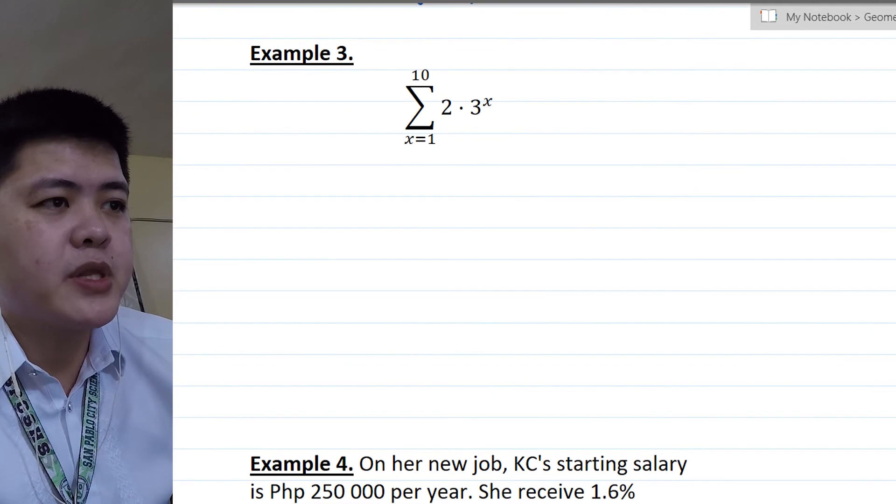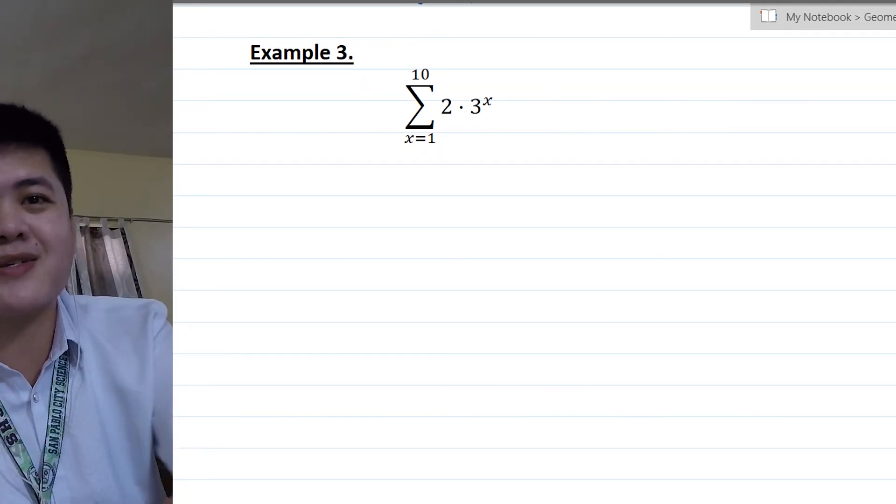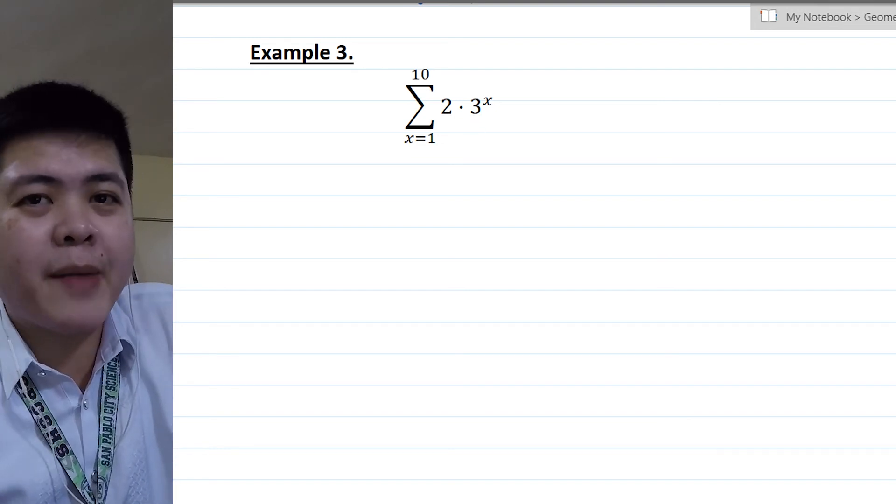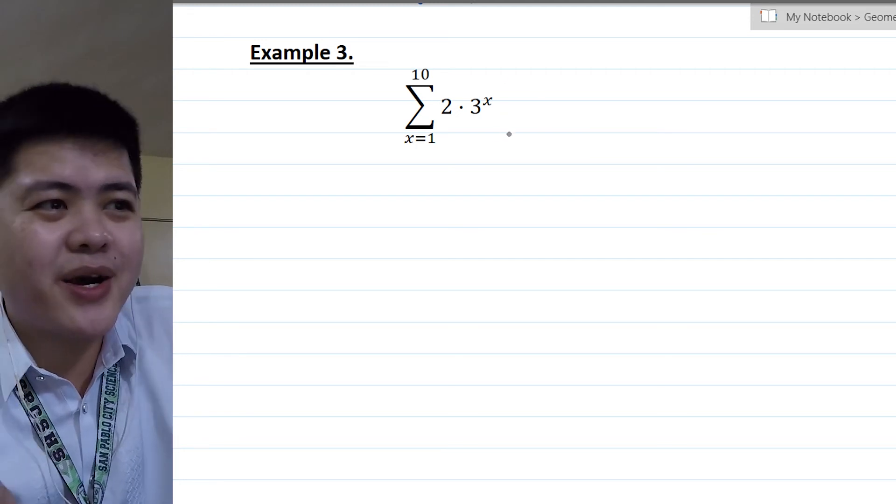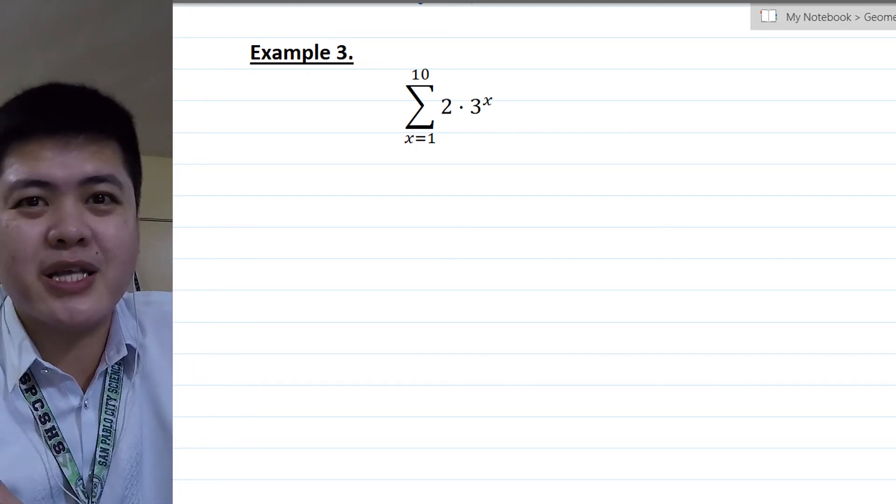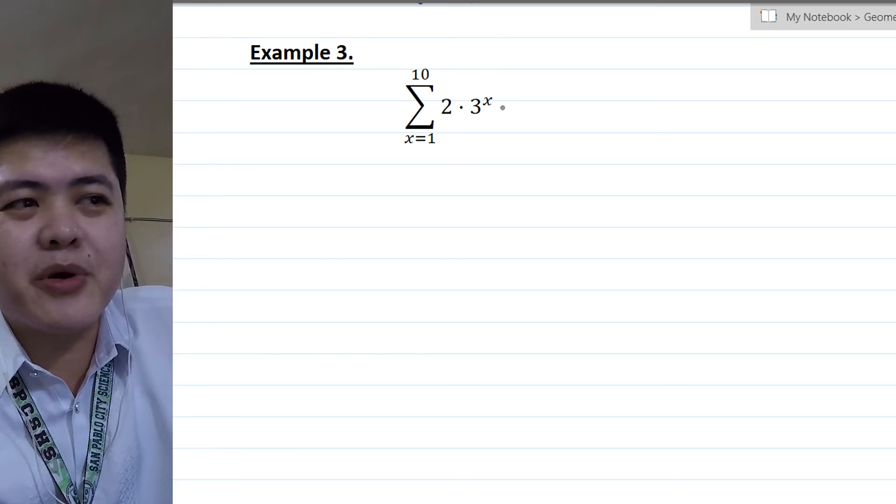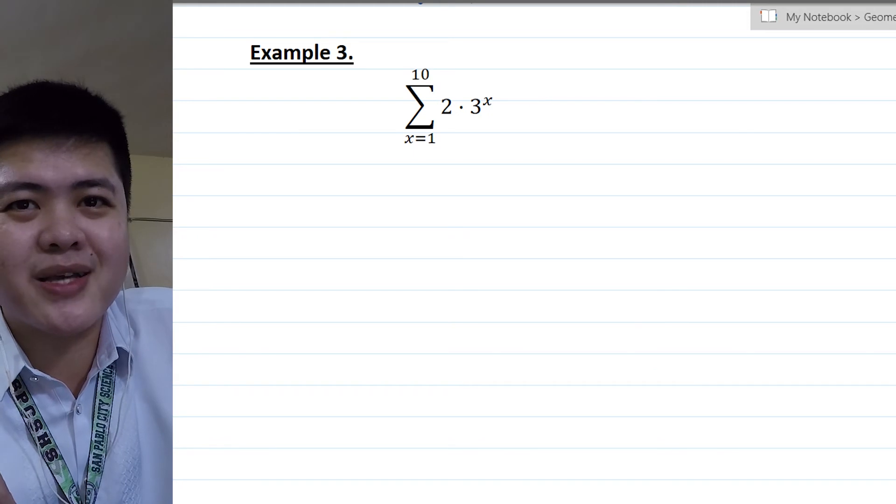Let's have example number 3. Summation of 2 times 3 raised to x as x runs from 1 to 10. The indicator to know if the summation is geometric is the exponent must be exponential. Or it's in exponential form. So your variable should be an exponent. That's your indicator that it's geometric.